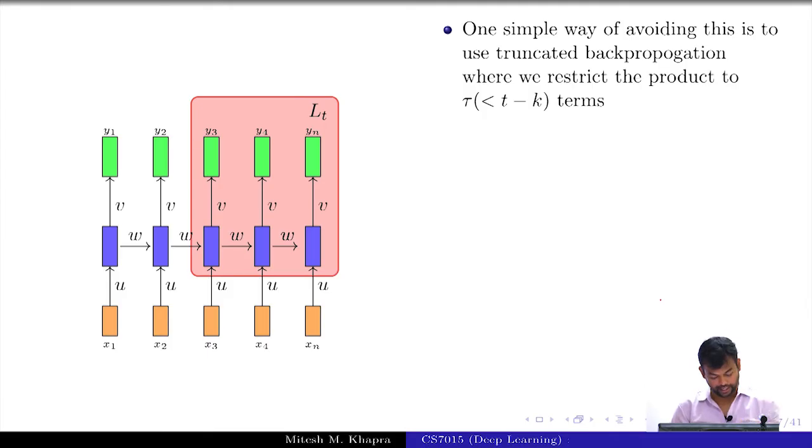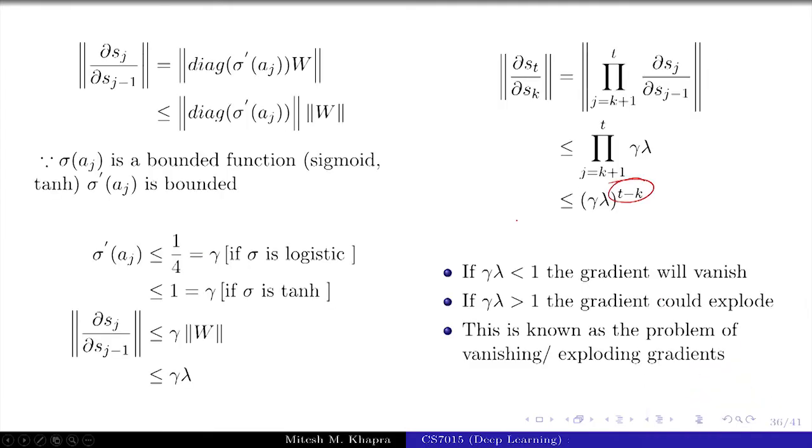So, one trick to avoid this is remember these are T minus K terms and the problem appears when your T is close to capital T and your K is close to 1. In those cases, you will have many terms in the product, as many as T terms in the product. So, even if this product is slightly less than 1, if you raise it to capital T, it is going to vanish. So, can you think of a solution for this and the last module in the title of this lecture was truncated backpropagation.